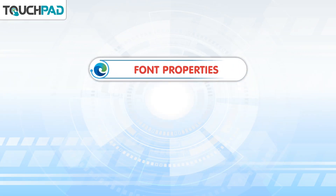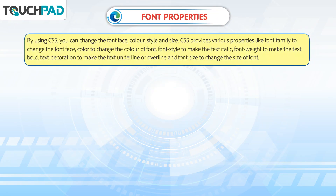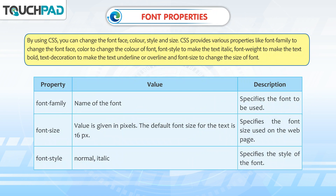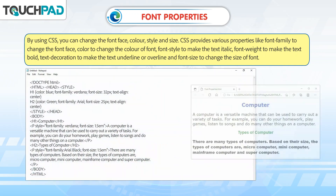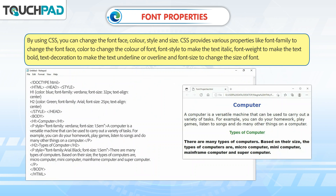Font properties. By using CSS you can change the font face, color, style and size. CSS provides various properties like font-family to change the font face, color to change the color of font, font-style to make the text italic, font-weight to make the text bold, text-decoration to make the text underline or overline, and font-size to change the size of font.